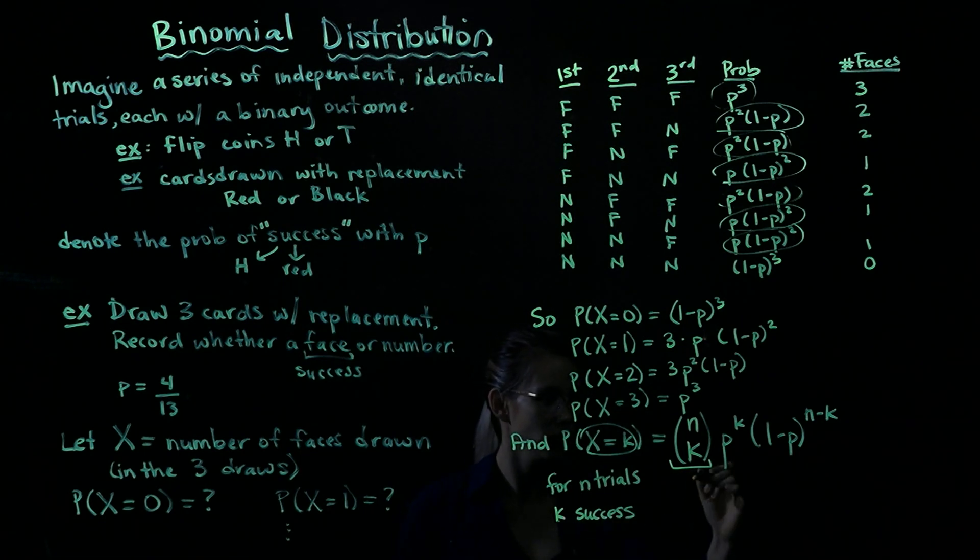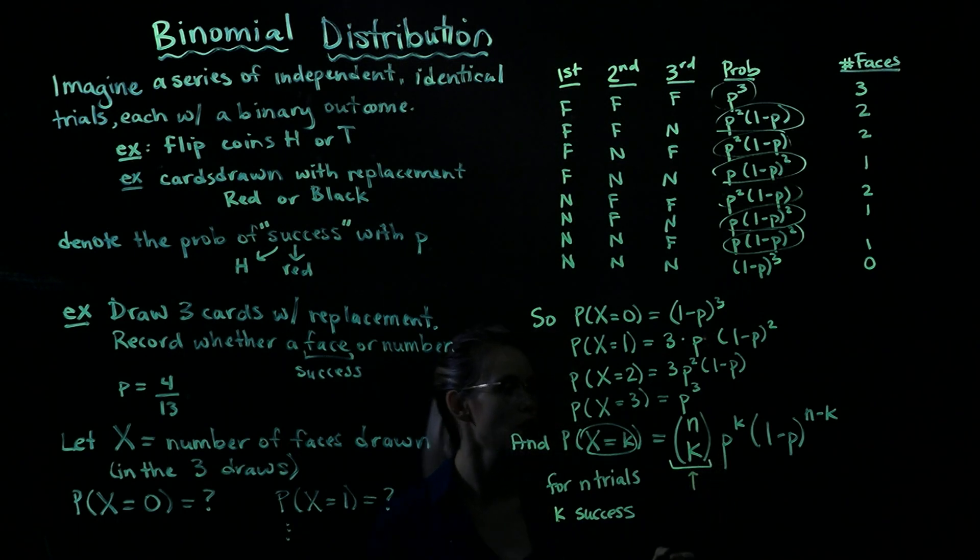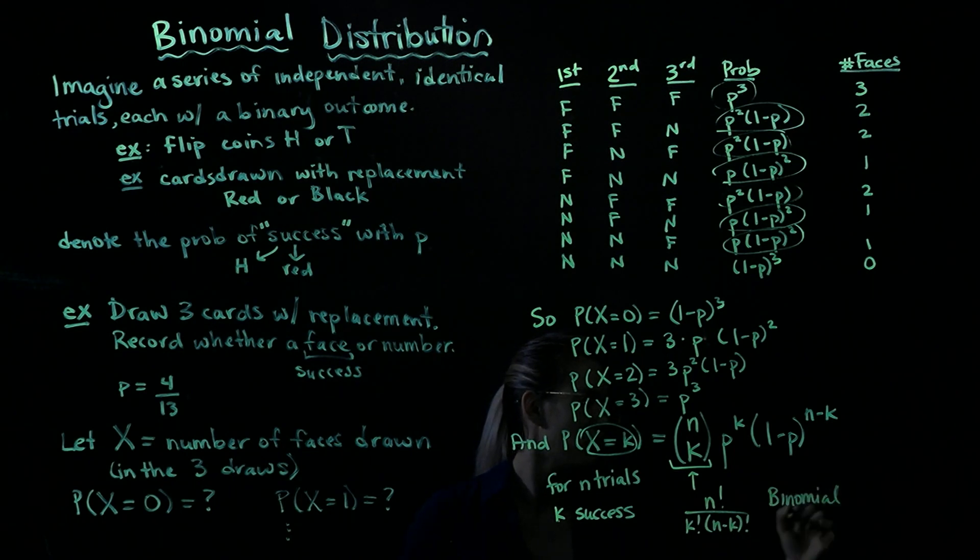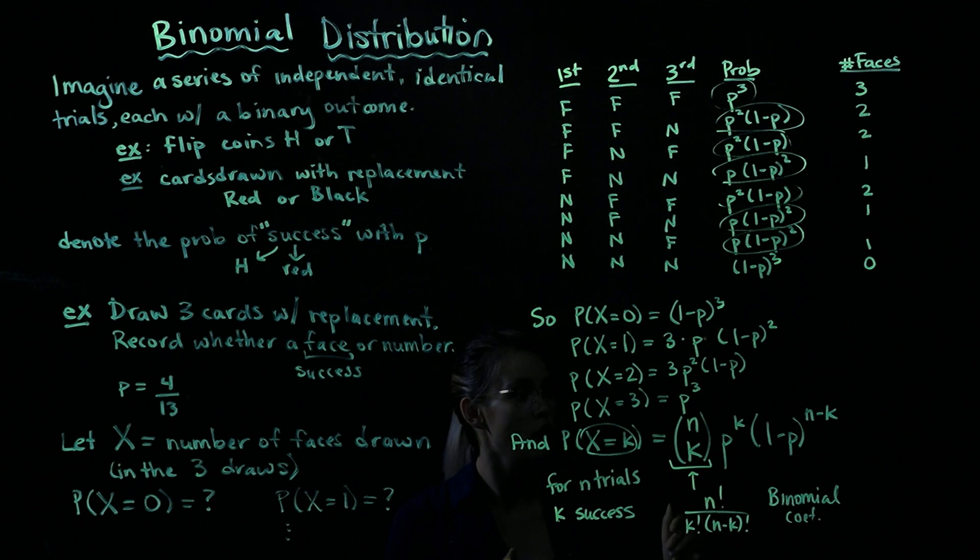All right, one more note. A couple videos ago, we introduced this, which, remember, is equal to n factorial over K factorial times n minus K factorial. And I called it the binomial coefficient. So now, hopefully, it makes a little bit of sense why it's called the binomial coefficient and why this is called the binomial distribution.